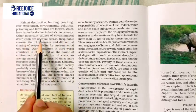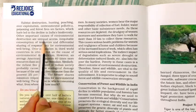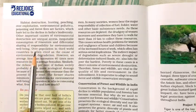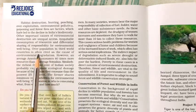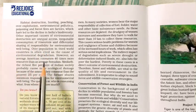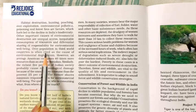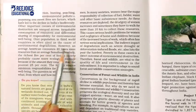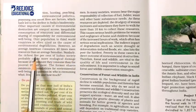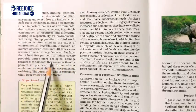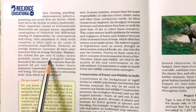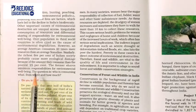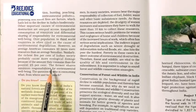Other important causes of environmental destruction are unequal access, inequitable consumption of resources, and differential sharing of responsibility for environmental well-being. Overpopulation in third world countries is often cited as the cause of environmental degradation. However, an average American consumes 40 times more resources than an average Somalian. Similarly, the richest 5% of Indian society probably cause more ecological damage because of the amount they consume than the poorest 25%.